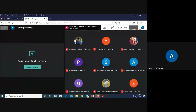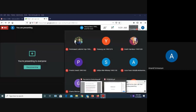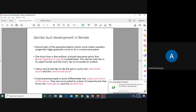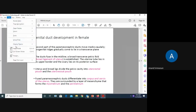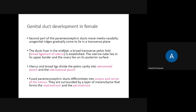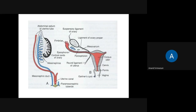Welcome back. We have seen the development of the gonads, and we were seeing the development of the genital ducts. We know that in females, the paramesonephric ducts develop and the mesonephric ducts degenerate. The two paramesonephric ducts unite with one another, whereas the mesonephric ducts do not unite. The mesonephric ducts open on either side of the sinovaginal bulb.